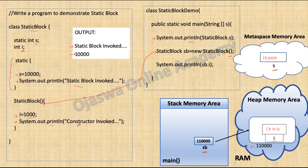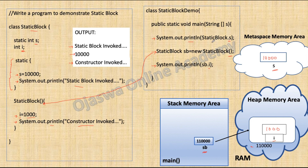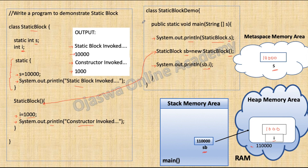Next, System.out.println executes and 'constructor invoked' is printed to the console. After the execution of the default constructor, control goes back and the next System.out.println is executed — we are printing the value of instance variable i. Instance variables are invoked using an object; we cannot invoke an instance variable using the class name. Static variables can be invoked using the class name, but instance variables cannot. Hence we write sb.i, and the value of instance variable i belonging to object sb is retrieved and printed. This is how the sequence of execution goes when we use a static block.